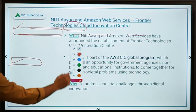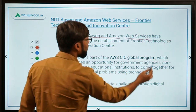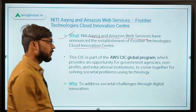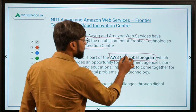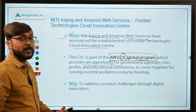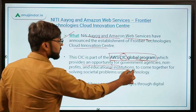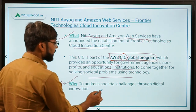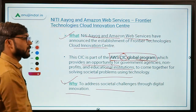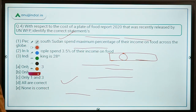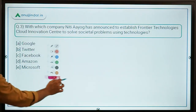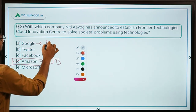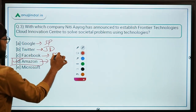NITI Aayog in collaboration with Amazon Web Services has announced the establishment of the Frontier Technologies Cloud Innovation Center. This CIC is part of the AWS CIC global program, which provides an opportunity for government agencies, non-profit organizations, and educational institutions to come together to solve societal challenges through digital innovation. The correct answer is option D — Amazon Web Services. For reference: Amazon CEO is Jeff Bezos, Google's is Sundar Pichai, Twitter's Jack Dorsey, Facebook's Mark Zuckerberg, and Microsoft's Satya Nadella.